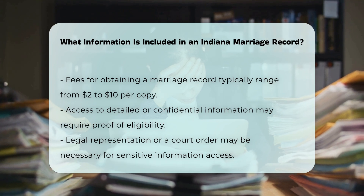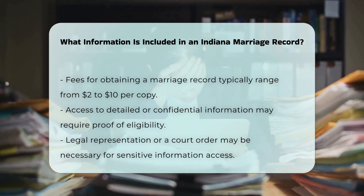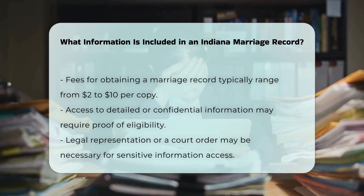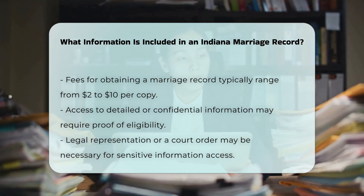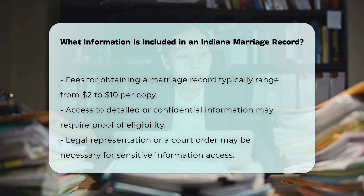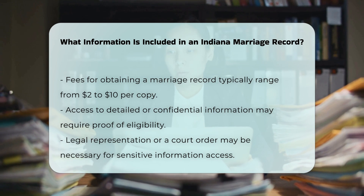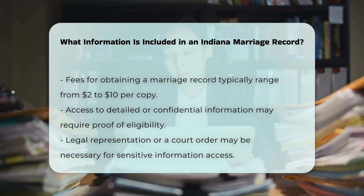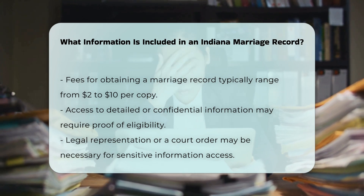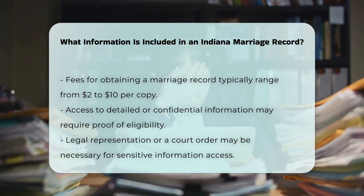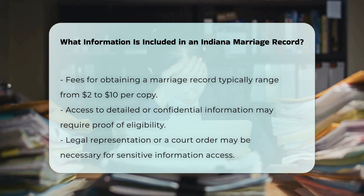Eligibility and restrictions. While basic information is accessible to the public, detailed or confidential parts of the record may require proof of eligibility, such as legal representation or a court order. This ensures that sensitive information is protected.